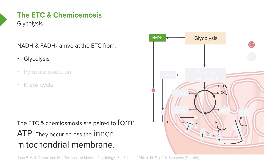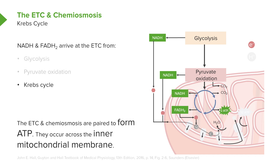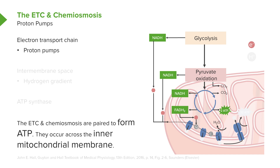We have NADH and FADH electron carriers. NADH came from glycolysis, some came from pyruvate oxidation — just two from each per glucose molecule — and now we've had a lot of them coming from the Krebs cycle. It's time to take them to the electron transport chain where we will create a proton gradient using proton pumps.